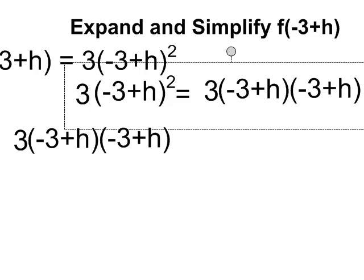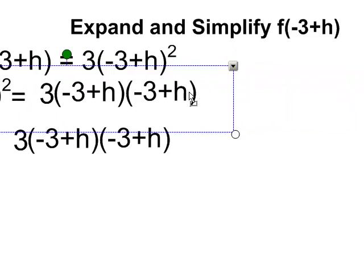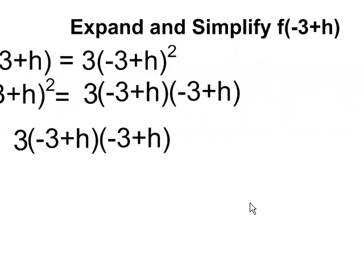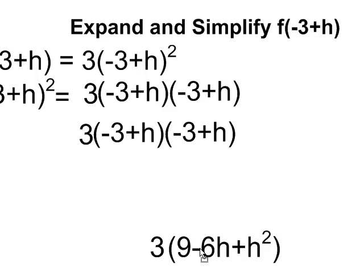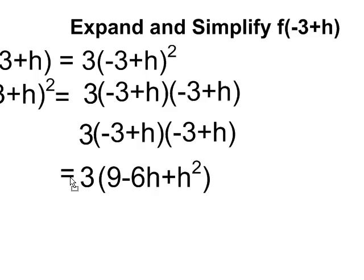I want to be careful here when I'm expanding this binomial. So there's what I'm trying to solve there. And so this binomial expanded looks like this. So be sure that you know how to do that. Negative 3 times negative 3 is 9. Negative 3 times h is negative 3h. H times negative 3 is also negative 3h. And when I gather those two terms together, I end up with negative 6h. And h times h, of course, is h squared.